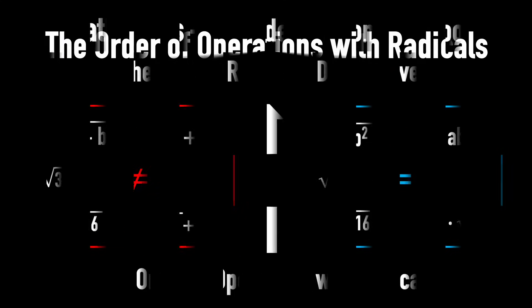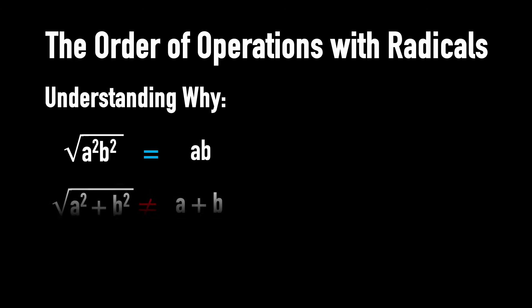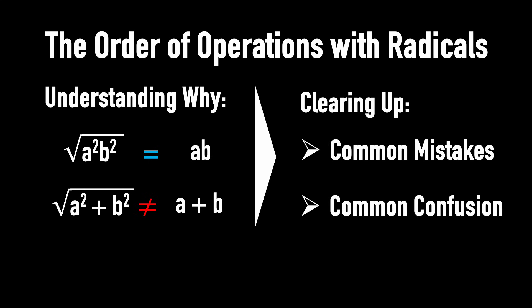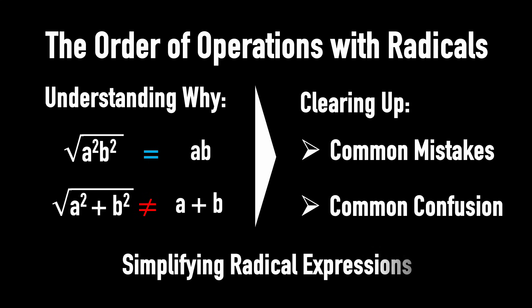This video explains the order of operations with radicals to help you understand why the radical sign is distributive over a product, but not over a sum. Clear up common mistakes and confusion in simplifying radical expressions.